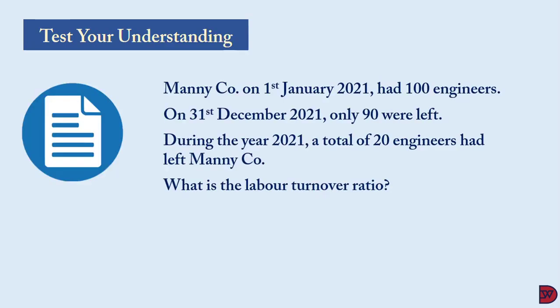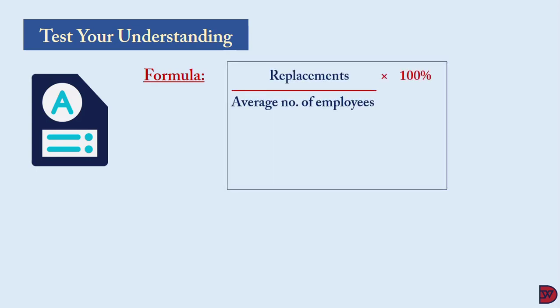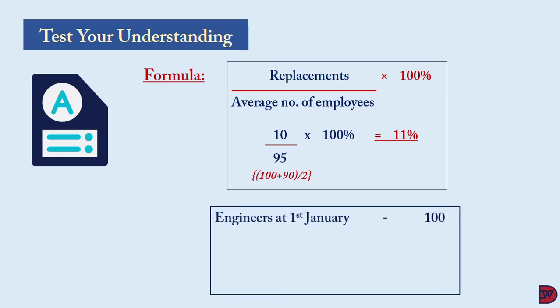Let's test our understanding: Manico on 1st January 2021 had 100 engineers. On 31st December 2021, only 90 were left. During 2021, a total of 20 engineers had left Manico. What is the labor turnover ratio? The formula is total replacements divided by the average number of employees, multiplied by 100. Replacements are 10, divided by the average of 95 employees, multiplied by 100, giving 11 percent.